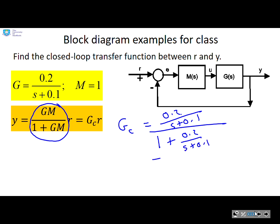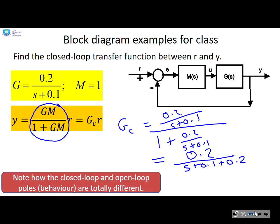But then if I multiply through by the denominator top and bottom, I'm going to get 0.2 over s plus 0.1 plus 0.2. Now what do you notice? The closed loop and open poles are different. So the open loop pole is at minus 0.1, and the closed loop pole you can see here is at minus 0.3.